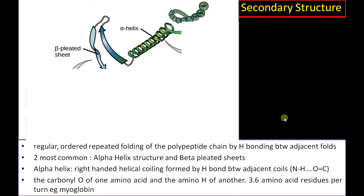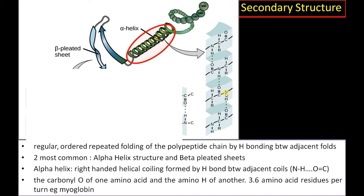Moving into secondary structure: regular, ordered, repeated folding of the primary structure forms the secondary structure. The major bond involved, apart from the peptide bond, is the hydrogen bond. The first common secondary structure is the alpha helix, formed by hydrogen bonds between the amide hydrogen and the carbonyl oxygen of distant amino acids. For example, the first amino acid combines with the fifth, causing folding into a helical structure. In alpha helix, there are approximately 3.6 amino acid residues per turn.